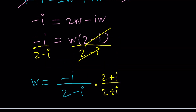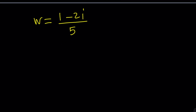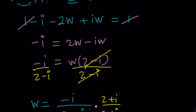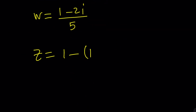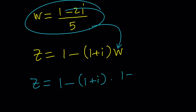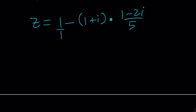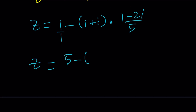What is Z? You can either plug W into one of the original equations, or use the formula from the substitution step — I find this easier. Z can be written as 1 minus 1 plus I times W. We do know W, so we substitute: 1 minus 1 plus I times 1 minus 2I over 5. Make a common denominator — 1 is 5 over 5 — so Z equals 5 minus 1 plus I times 1 minus 2I, all over 5.